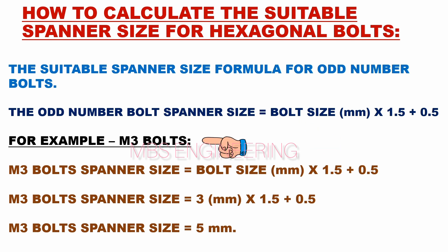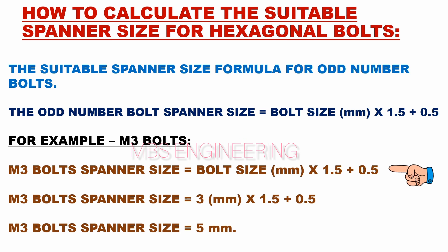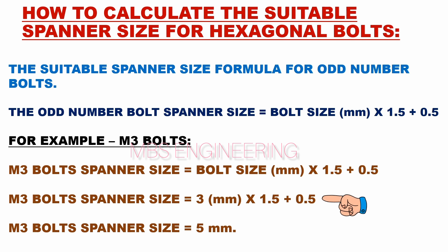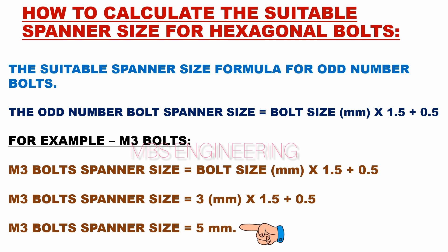We will understand the sample calculation for M3 bolts. The M3 bolt spanner size equals bolt size in mm multiplied by 1.5 plus 0.5, which equals 3 mm multiplied by 1.5 plus 0.5. Therefore, the M3 bolt spanner size equals 5 mm.